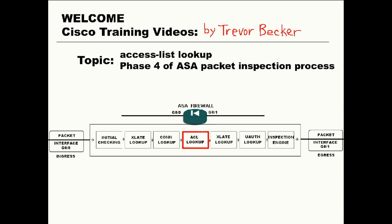First, let's define exactly what an Access List is. An Access List is simply a list of permit or deny statements on a firewall that's either ingressing or egressing an interface on a firewall. Once an Access List is applied to a firewall's interface, it becomes a vital part of that packet inspection process because that Access List explicitly lists the type of traffic that can be permitted through.